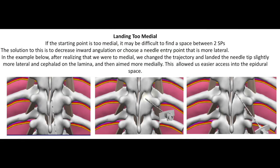What happens when you land too medial? It may be difficult to find the space between two spinous processes. Consider decreasing the inward angulation or choose a needle entry point that is more lateral.